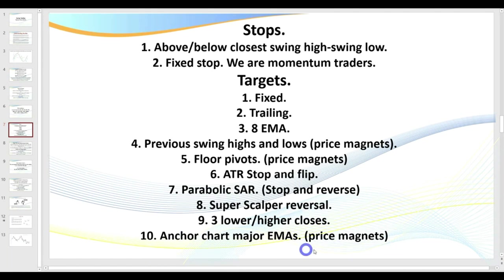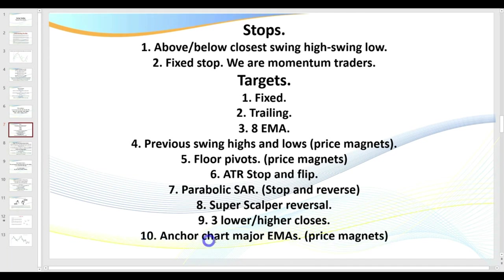We also want to consider the major EMAs on the anchor charts at higher time frames — these areas are vastly underestimated. If we have a dip on our entry chart but on the anchor chart we're well above and we start to head back up, be aware that the anchor chart 200 EMA might be 30 points above. Time and time again we bounce off the 89 EMA and 200 EMA on anchor charts — they make great reversal trades. Be very aware of any areas of support or resistance where you may get a bounce. Weekly pivots are price magnets, as are the major EMAs.